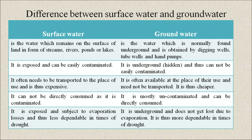Surface water cannot be directly consumed. Groundwater is mostly uncontaminated and can be directly consumed. Surface water is exposed and subject to evaporation losses, making it less dependable in times of drought. Underground water is not lost to evaporation and is thus more dependable in times of drought.